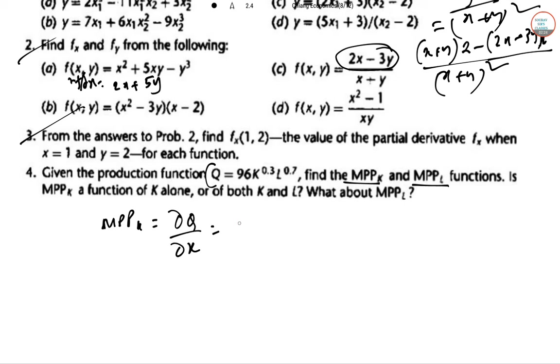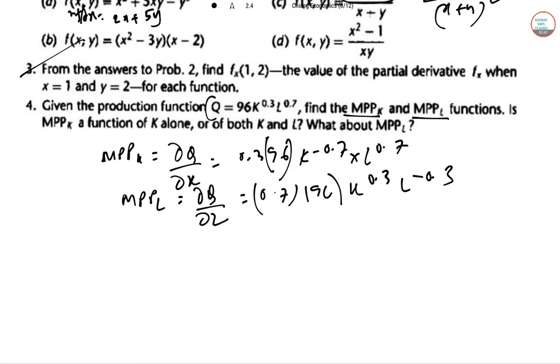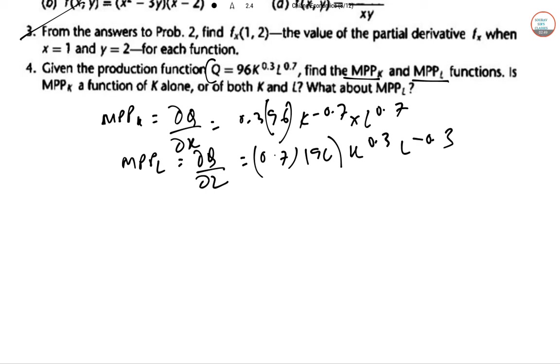So that is del Q by del K, that is 0.3 times 96 K to the power minus 0.7 L to the power 0.7. MPPL, del Q del L, so 0.7 times 96 K to the power 0.3 L to the power minus 0.3. So this is the second part done.